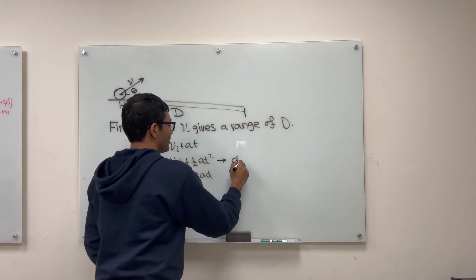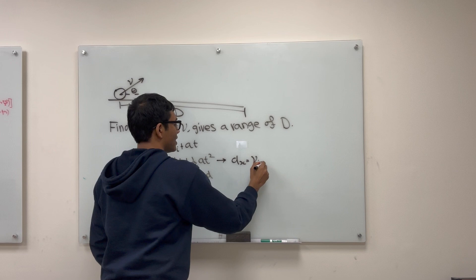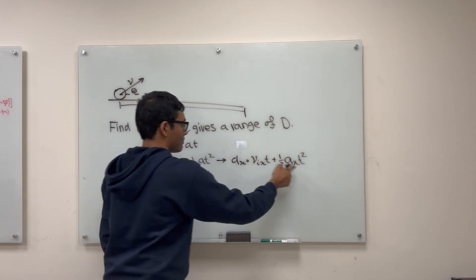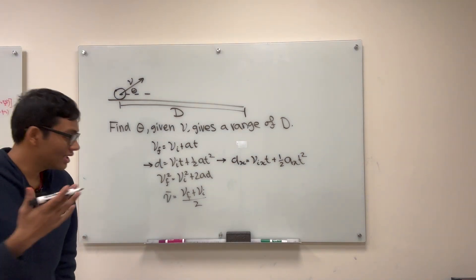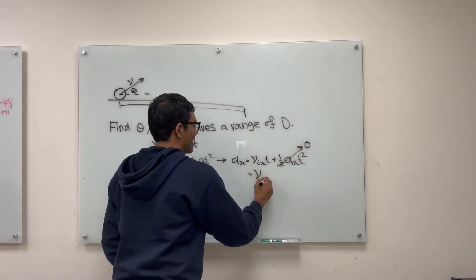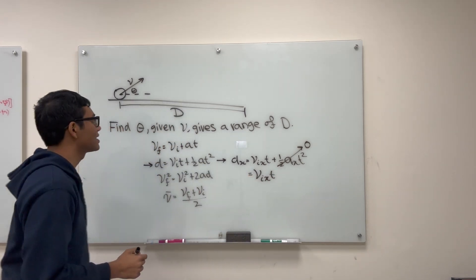So in the x direction, I have dx equals vi x t plus one half ax t squared. Now there is no acceleration in the x direction, so this term is just zero. And so I'm just left with vi x t. But what is vi x?